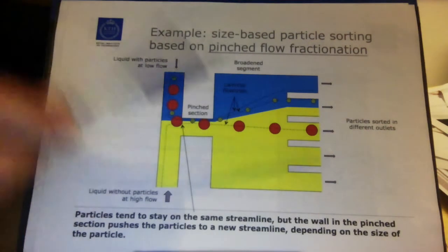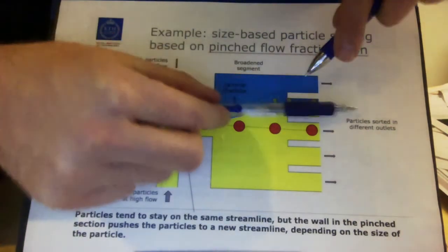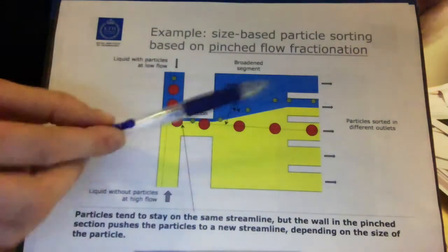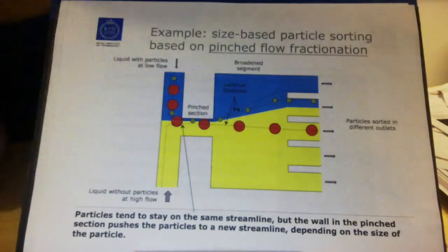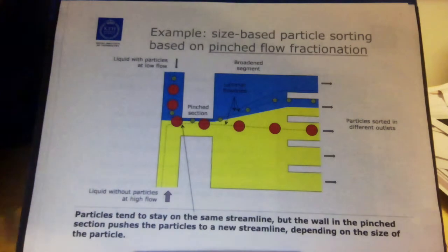And now the only thing I have to do is just take a number of different outputs here. I can take as many as I want and basically in every output I will have a certain range of sizes of particles. This is called pinched flow fractionation.